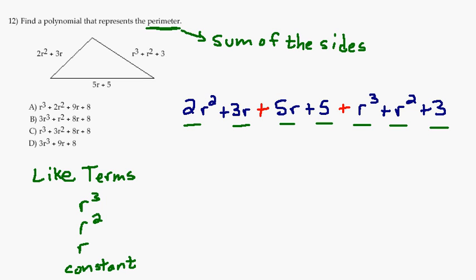So for our r to the third terms, we have just got this guy right here, that's it. For our r squared terms, we've got 2r squared and we've got an r squared here. For the r terms, we've got a 3r and a 5r. And for our constant terms, we've got a 5 and a 3. Now we're going to combine those together and write our final answer.